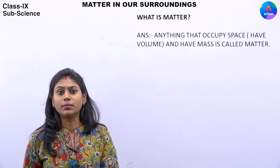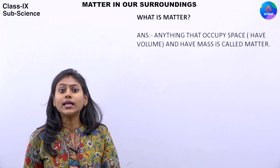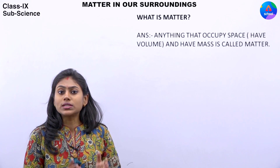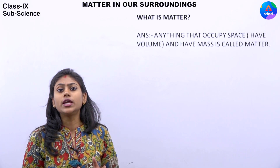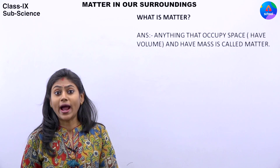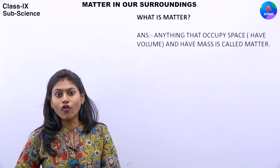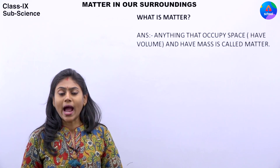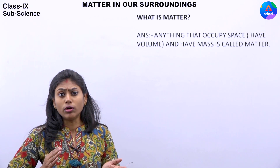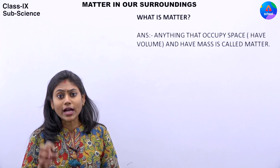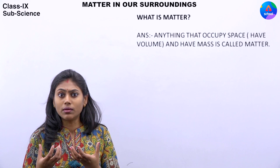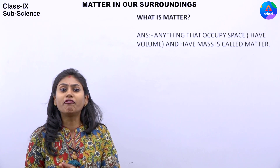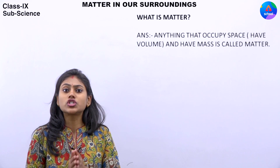जब हम mass की बात करते हैं तो उसका मतलब है कि matter जो atoms से बनी हुई है, उसके अंदर exactly कितने number of atoms हैं। अगर किसी object में ज़्यादा atoms हैं तो उसका mass ज़्यादा होगा, और अगर कम atoms हैं तो mass कम होगा। Mass जो है वो constant रहेगा, जबकि weight gravitational pull पर depend करता है।